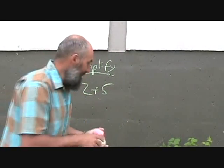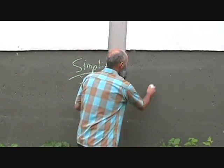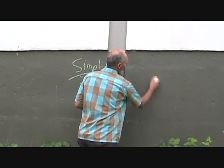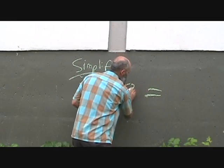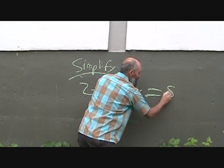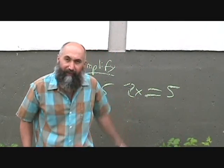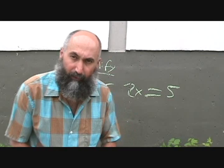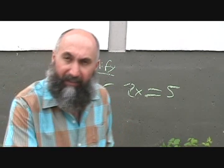There has to be an unknown — initially, for us, there's going to be an unknown in our equations. When we start doing this, we're going to have something like 2x is equal to 5. So there's going to be a letter, a symbol. Keep this in mind.